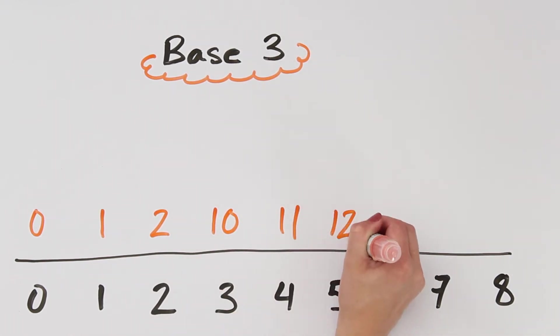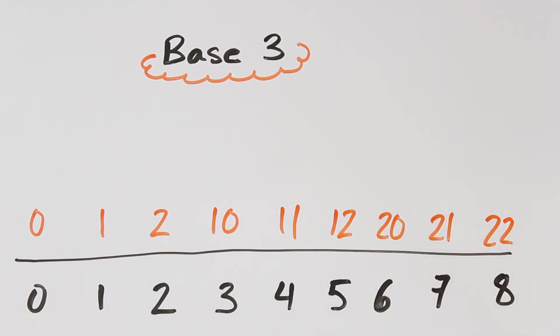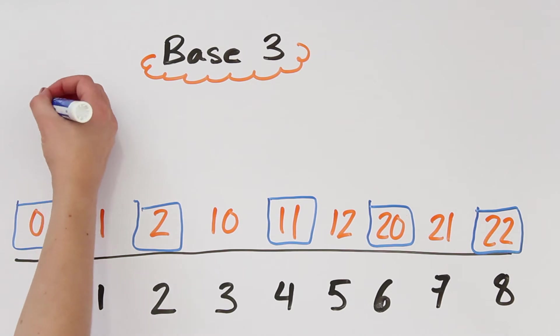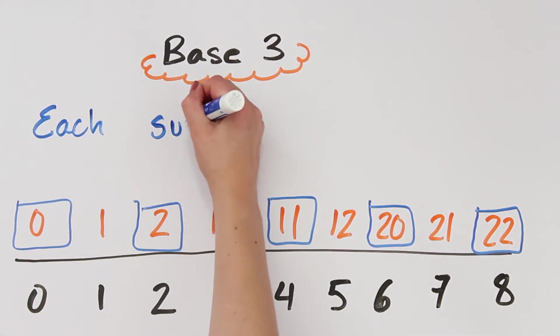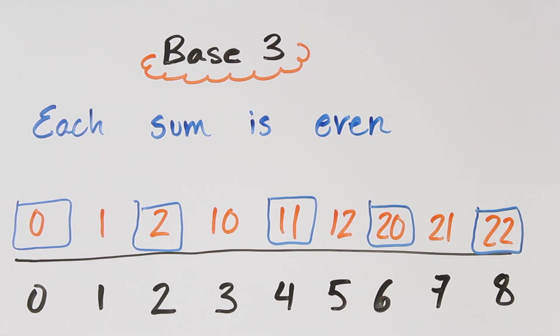2, 0, 2, 1, 2, 2. Now these are the numbers which are divisible by 2. Notice that the sum of the digits in each circled number is even. So in base 3, you can tell if a number is divisible by 2 by adding all the digits and seeing if the sum is even.